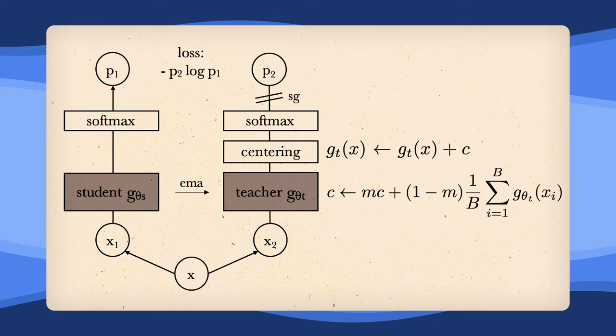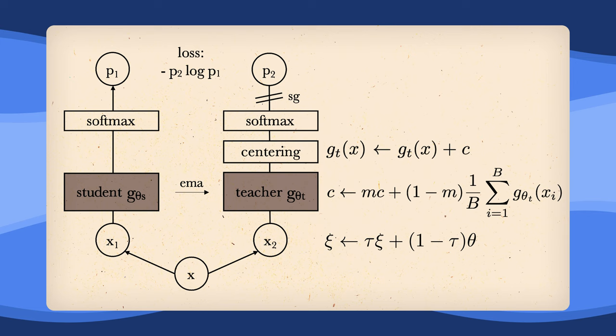This hyperparameter m is pretty much the same as the tau parameter in the EMA equation. We update this bias parameter c slightly with every batch. This centering is probably the main operation to avoid collapse to a constant function.